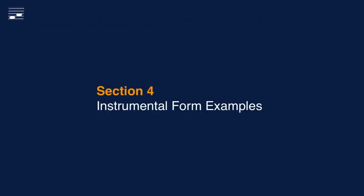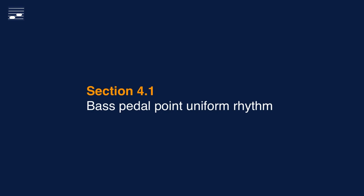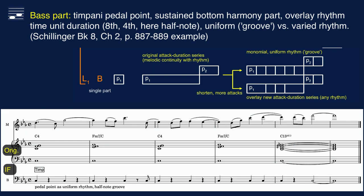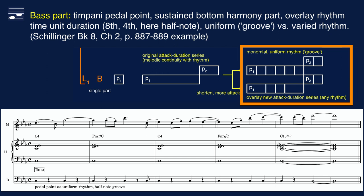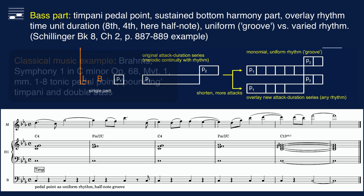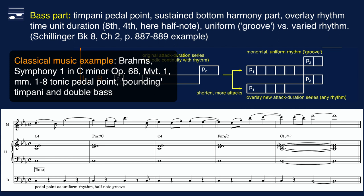You will have been designing instrumental forms when adding instruments to an existing score. A typical example is writing a timpani part for a given bass in the harmony — here the tonic pedal point in the B phrase. The original consists of whole notes, but in the timpani part we overlay an attack duration pattern using the half note as the basic time unit. The score illustrates how we obtain more attacks with shorter durations and a specific rhythmical groove. A great classical example, with uniform rhythm — pounding quarter notes for timpani and double bass — is found in the tonic pedal point opening measures of Brahms's first symphony.